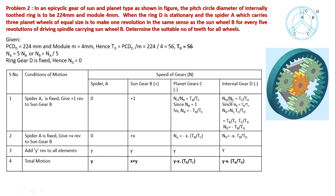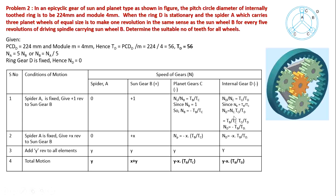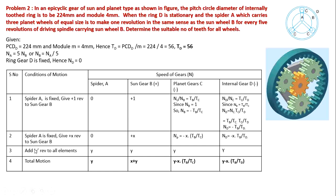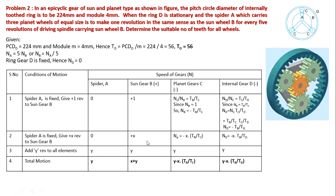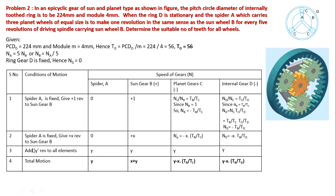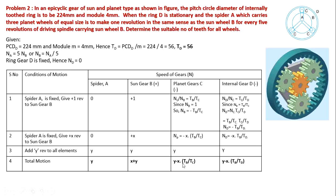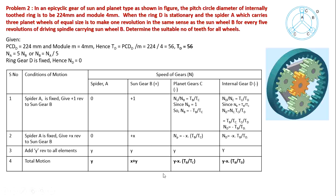Second gear ratio: ND/NC equals TC/TD. Substituting NC: TC cancels, giving ND equals minus TB/TD. Second step: give X revolutions to sun gear B — arm gets 0, gear B gets X, gear C gets minus X times TB/TC, internal gear D gets minus X times TB/TD. Third step: add Y to all elements — arm gets Y, gear B gets X plus Y, gear C gets Y minus X times TB/TC, gear D gets Y minus X times TB/TD.